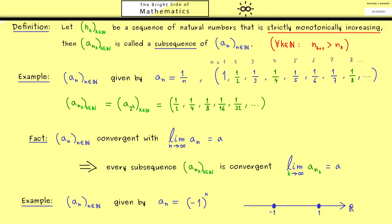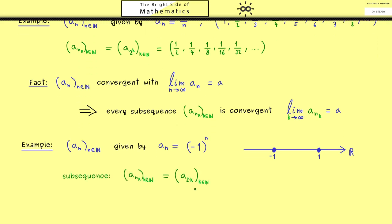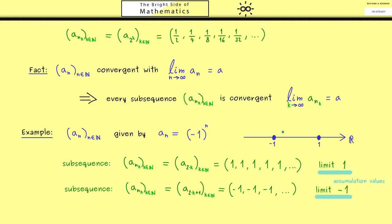However we still find convergent subsequences. For example we could restrict ourselves to the even indices which means we stay at 1 for the whole sequence. Clearly that's a convergent sequence, and we immediately see the limit which is 1. Of course we can also consider the odd indices which means we stay at minus 1 the whole time. This means that we get another subsequence which is also clearly convergent, however with another limit which is minus 1 in this case. And now these limits we get for subsequences are called accumulation values for the sequence an.